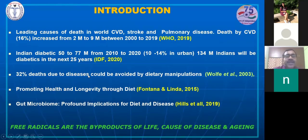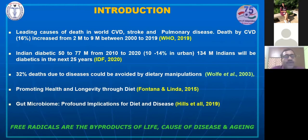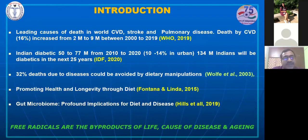One estimate shows that about 32% of deaths due to disease can be avoided by proper dietary manipulation. Recent literature on promoting health and longevity through diet shows that proper diet can greatly improve health and longevity. One more very recent and exciting area is gut microbiome — its profound health implications for diet and disease. There has been a lot of awareness and research on gut microbiome in the last decade or so, and I will be highlighting it further.